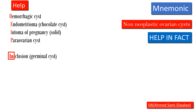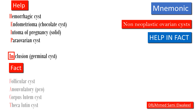HELP IN covers non-functional cysts: H for hemorrhagic cyst, E for endometrioma (chocolate cyst), L for luteoma of pregnancy (a solid cyst), P for para-ovarian cyst, and N for germinal inclusion cyst. FACT covers functional cysts: F for follicular cyst, A for endometrioma, C for corpus luteum cyst, and T for theca-lutein cyst.